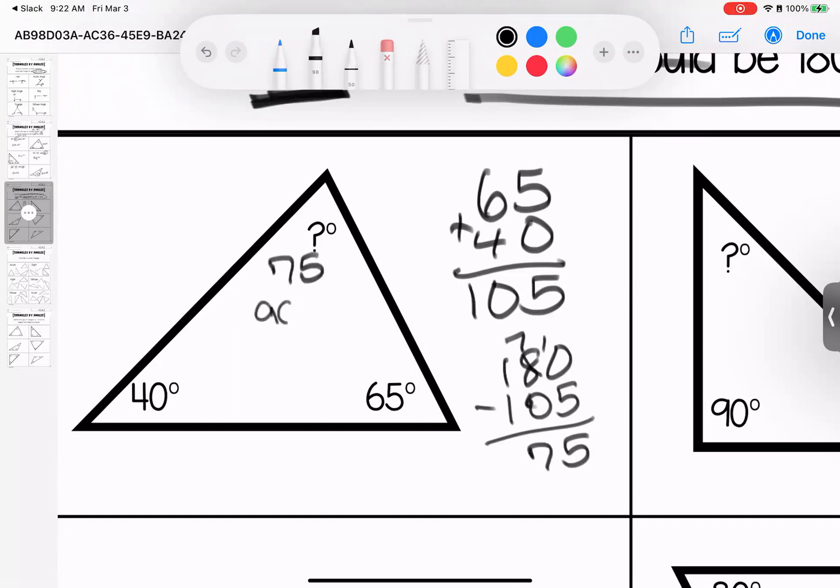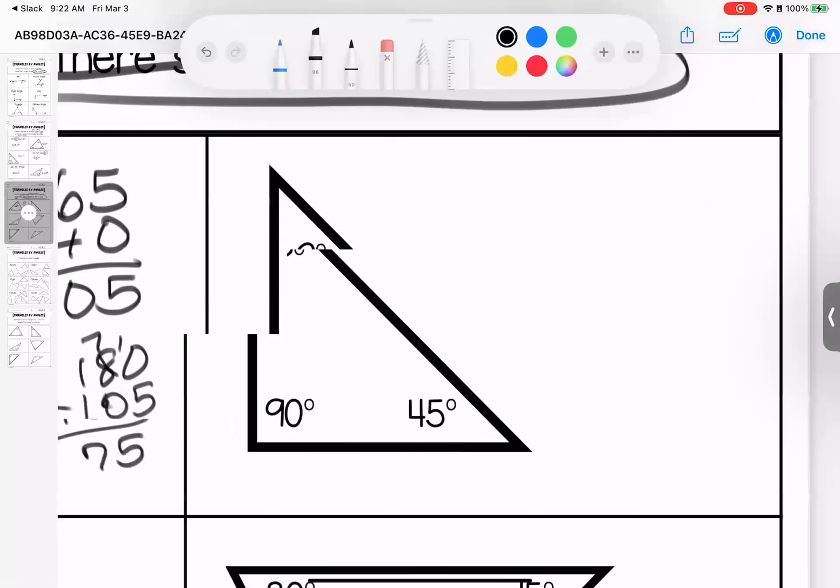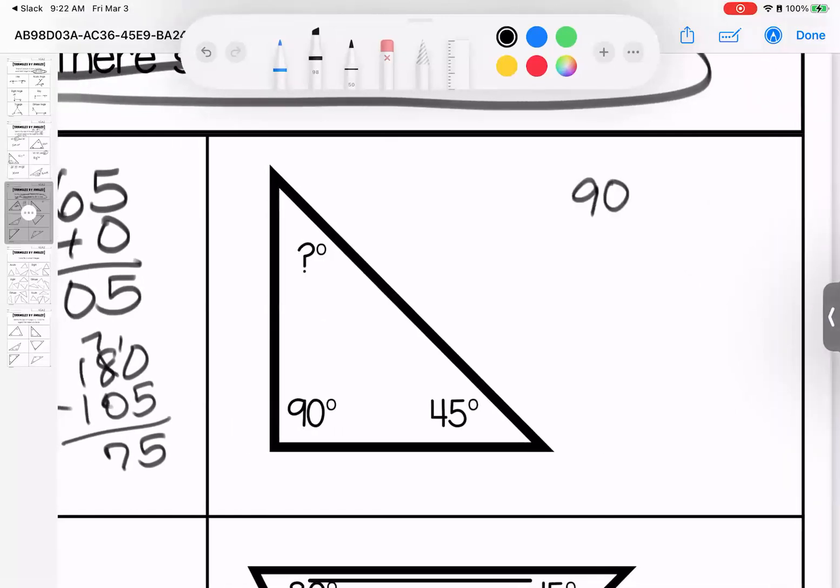So this angle is 75 degrees, and it is an acute angle. Again, we're naming the angle, it's an acute angle. So I have 90 degrees and 45 degrees that are given to me. When I add that up, I have 135 degrees. I need 180 degrees. When I subtract, I'm left with 45 degrees.